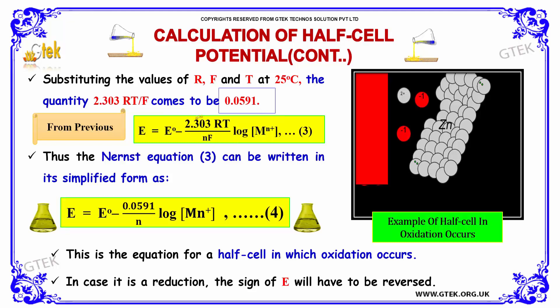by replacing and substituting the values, E = E° - (0.0591/n) log[Mn+]. This is the equation for a half cell where oxidation occurs. In case it is a reduction, the sign of E will have to be reversed.